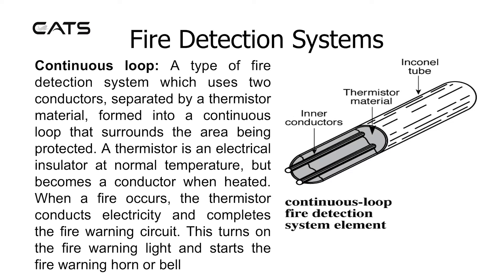Fire detection systems — continuous loop. This is a type of fire detection system which uses two conductors, separated by a thermistor material, formed into a continuous loop that surrounds the area being protected. A thermistor is an electrical insulator at normal temperature, but becomes a conductor when heated. When a fire occurs, the thermistor conducts electricity and completes the fire warning circuit. This turns on the fire warning light and starts the fire warning horn or bell.